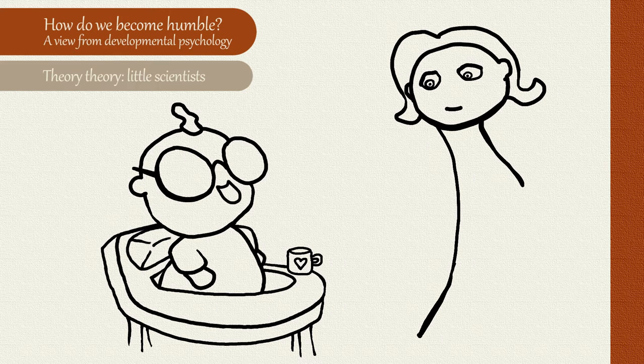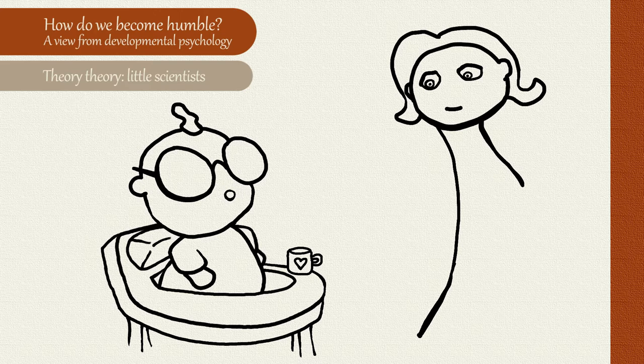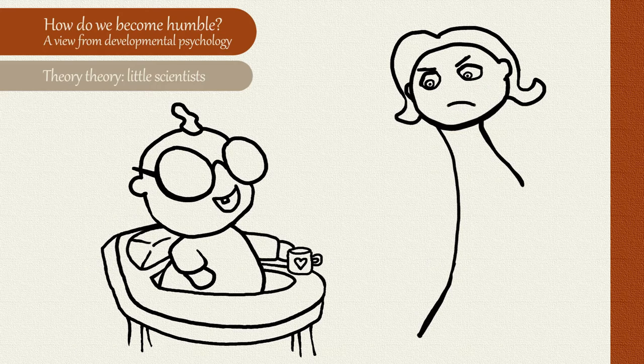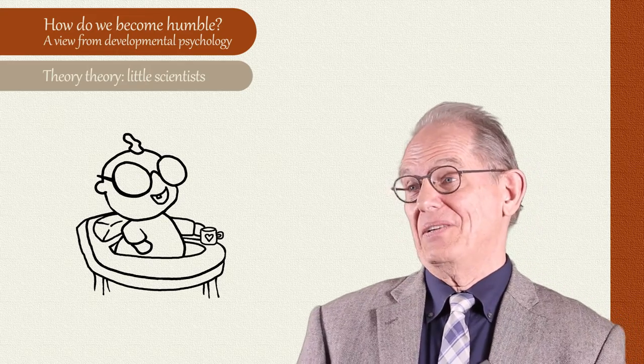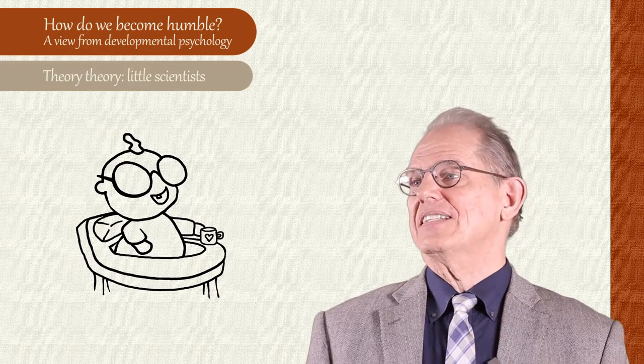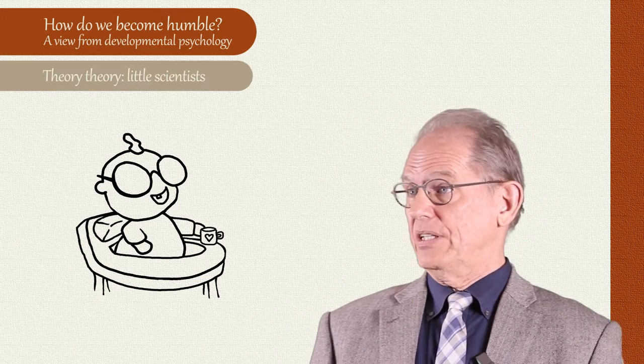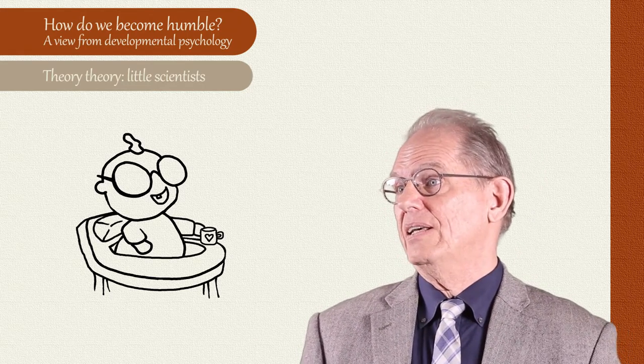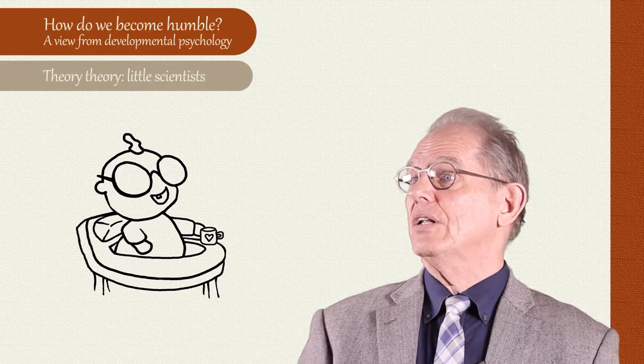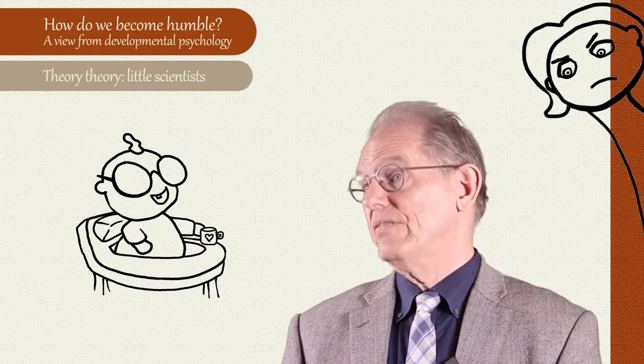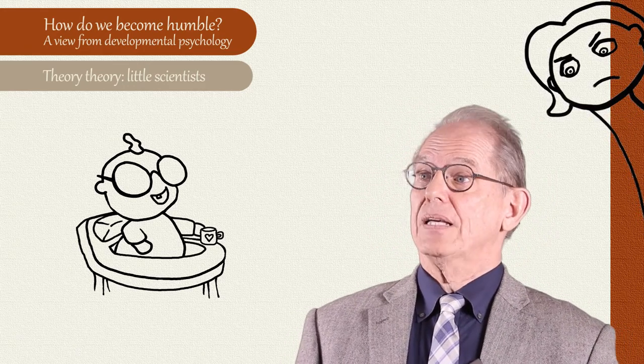However, the child is also observing that the adult nearby will pick up the object and return it to the child. Perhaps the child is testing a theory that the adults always return an object that has fallen to the ground whenever the child drops it. As the child continues to test these theories by dropping objects over and over and over again, the child begins to see that the theory of gravity is pretty well established. Things, when dropped from high places, do always seem to fall to the ground. But about the theory that the adult nearby will always return the object, the evidence is more mixed. It seems the adult can tire of the experiment and sometimes pick it up and sometimes not.